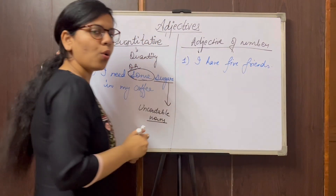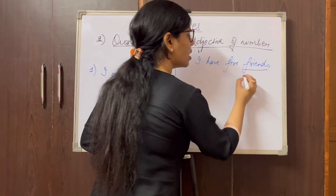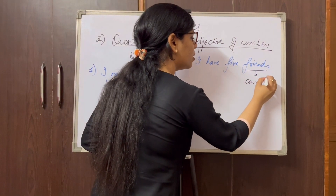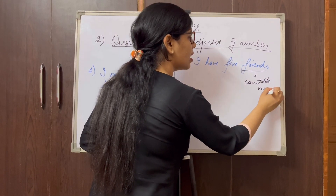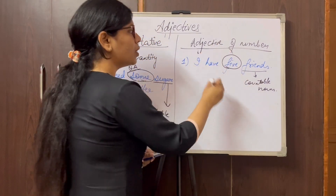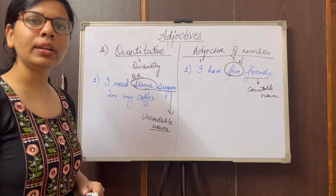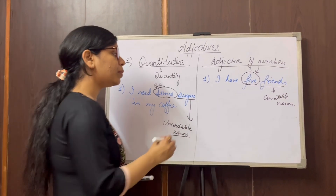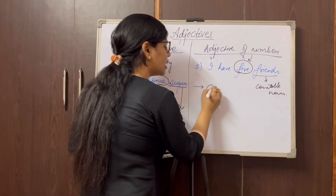What is the noun here? Friends. This is a countable noun — we can easily count the number of friends. And how many friends do I have? Five. So 'five' becomes your adjective of number. Adjective of number can be further classified into two types: cardinal number and ordinal number.